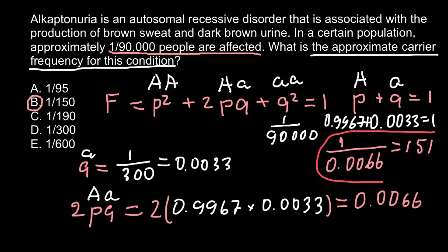And of course, you can find now the frequency of the homozygous dominant genotype. And here, the frequency of the heterozygous genotype is 1 out of 150. Let's put 150.